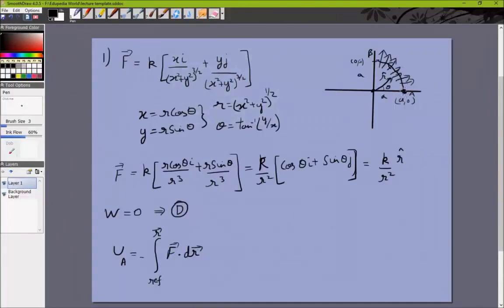We know that at infinity the potential is zero; that is what we always assume. So this will mean U_A equals minus integral from infinity to a...